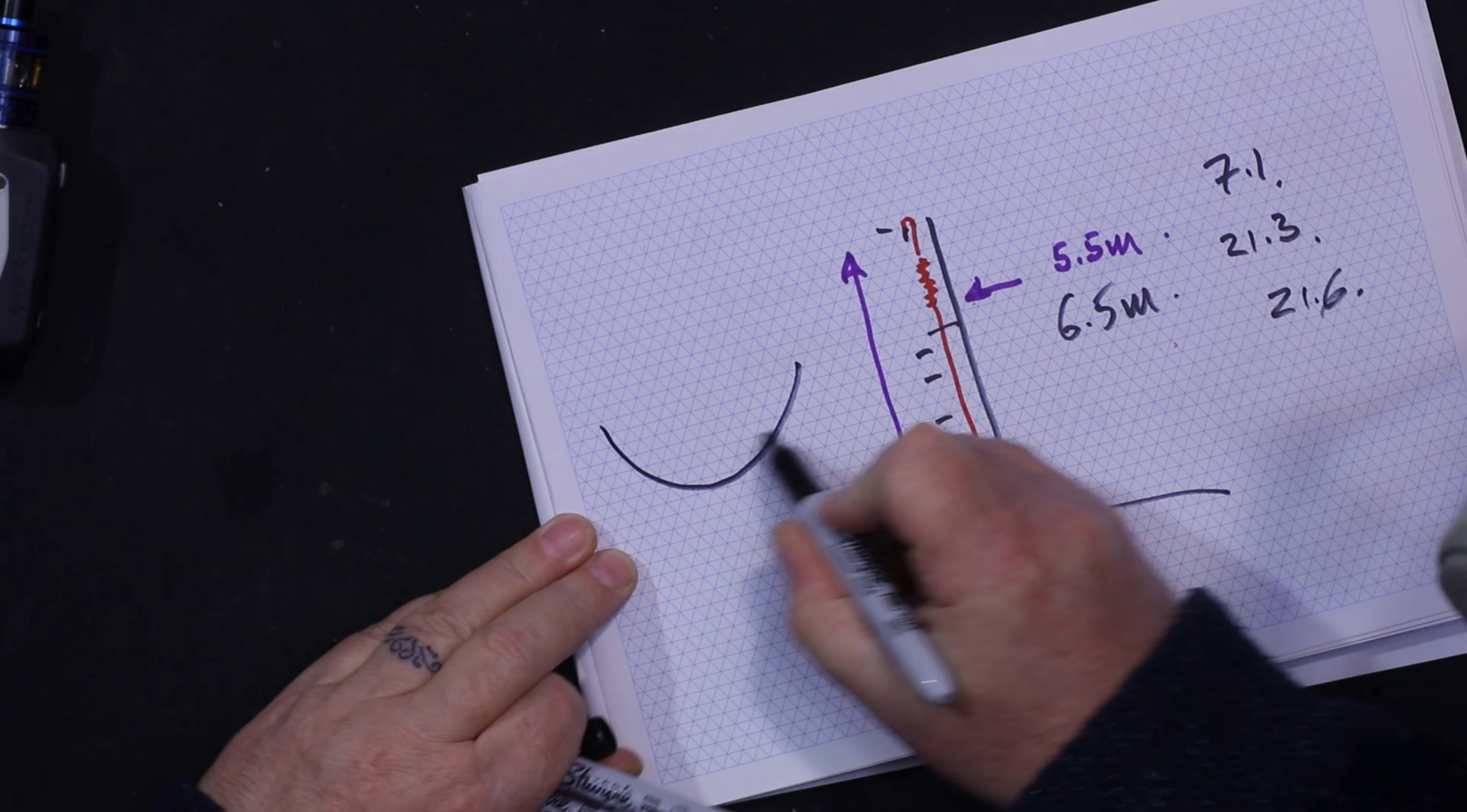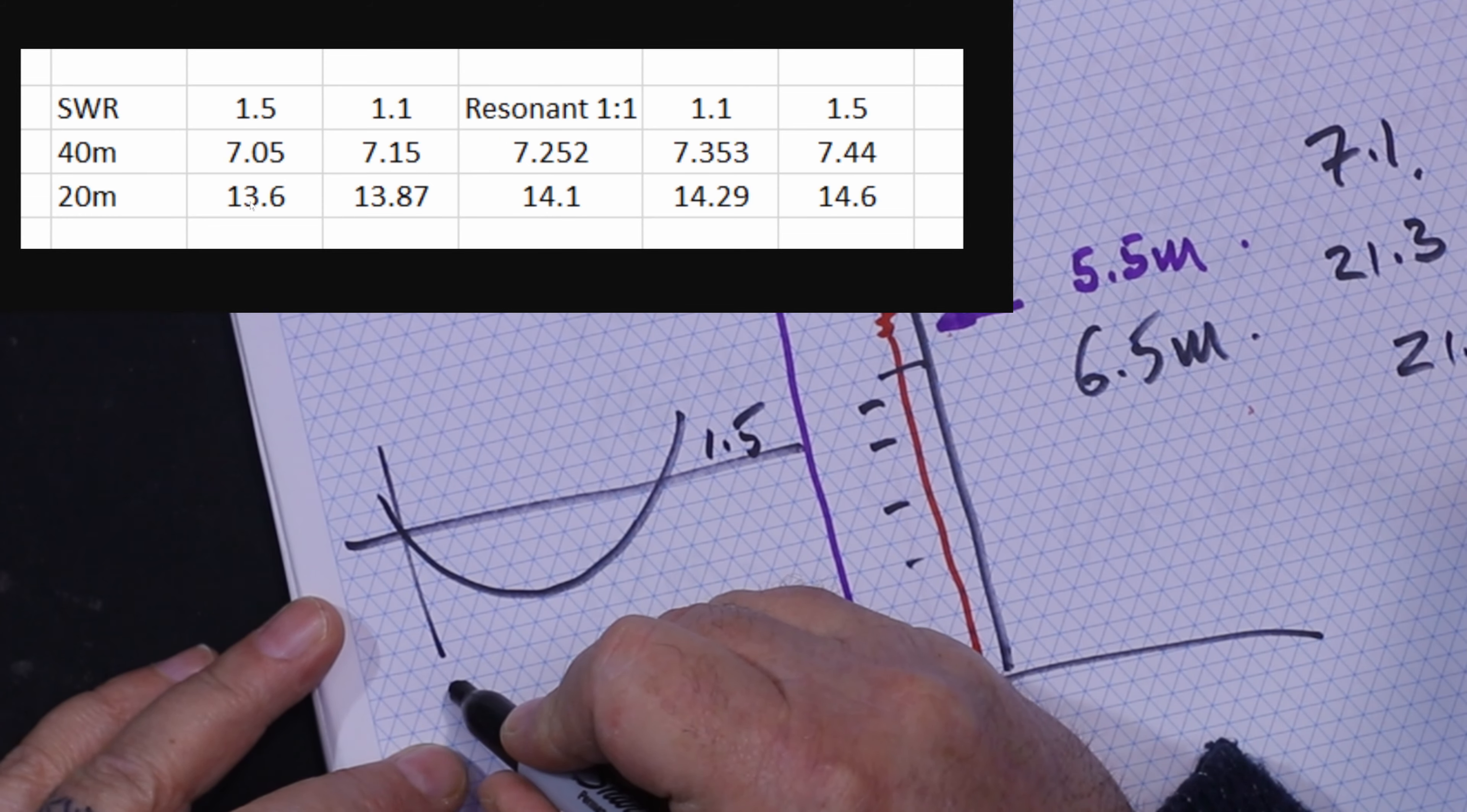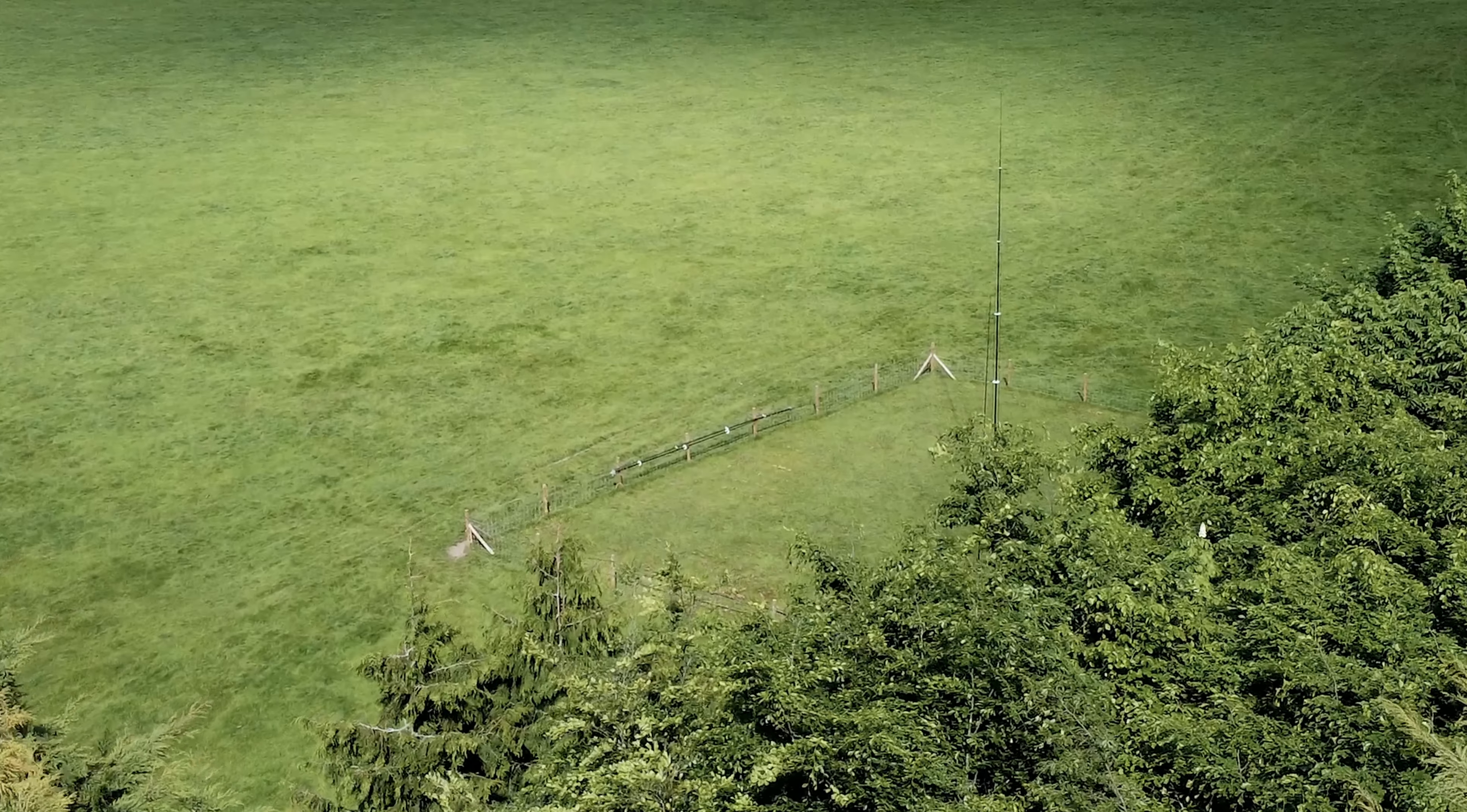On 20 meters, if you look at the 1.5 to 1 SWR curve, the frequency there is at 13.6. The spot frequency was literally 1 to 1 at 14.1, so that was 13.6, 14.1, and at the other end 14.6—great bandwidth.